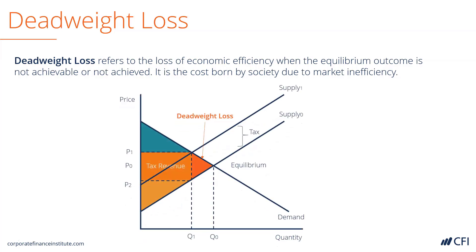To put it another way, we can look at this supply and demand graph. In this graph, we can see that the equilibrium point is at quantity Q0 and price P0. However, the state of the market is actually at Q1 and P1. The area of the dark orange triangle is the deadweight loss because we are not at the equilibrium point.